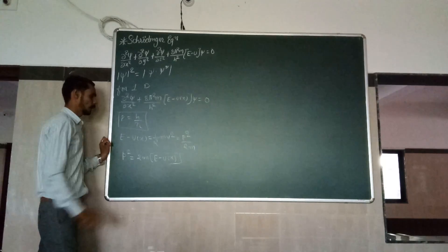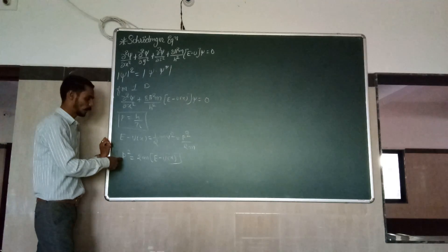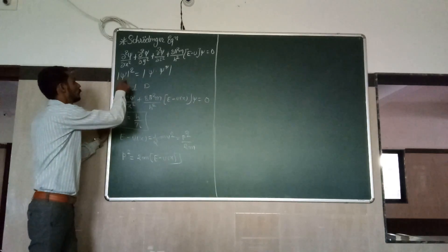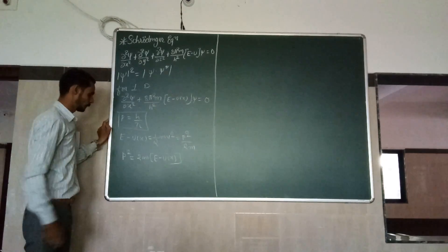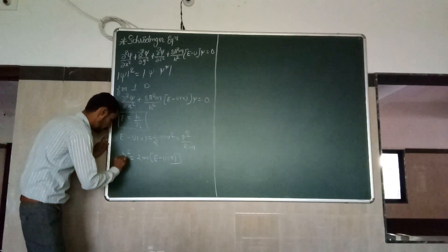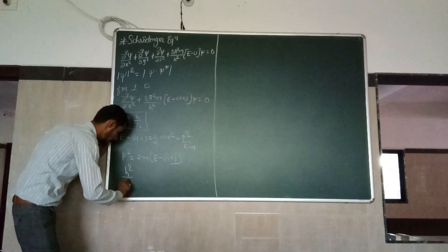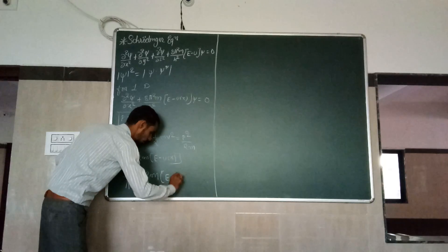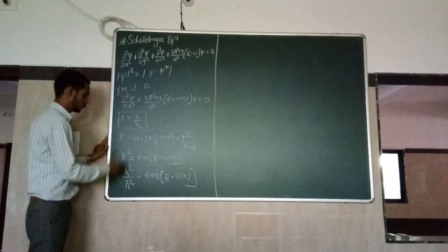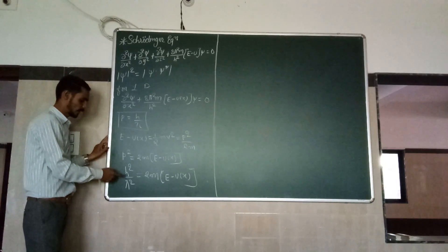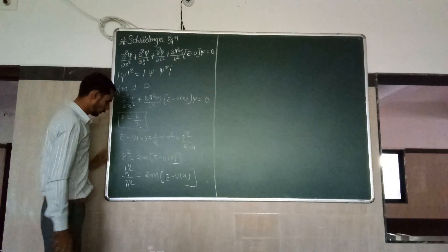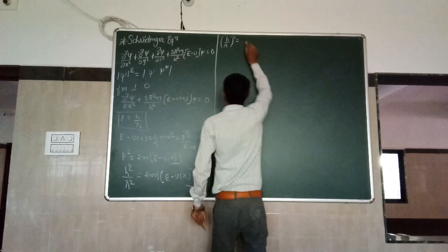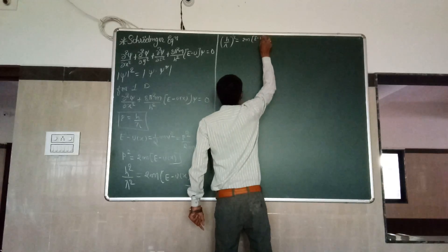We also know that p squared equals h squared over lambda squared. So substituting the value of p as h over lambda, we get h squared over lambda squared equals 2m times (E minus U(x)). This can be written as (h over lambda) whole squared equals 2m times (E minus U(x)).